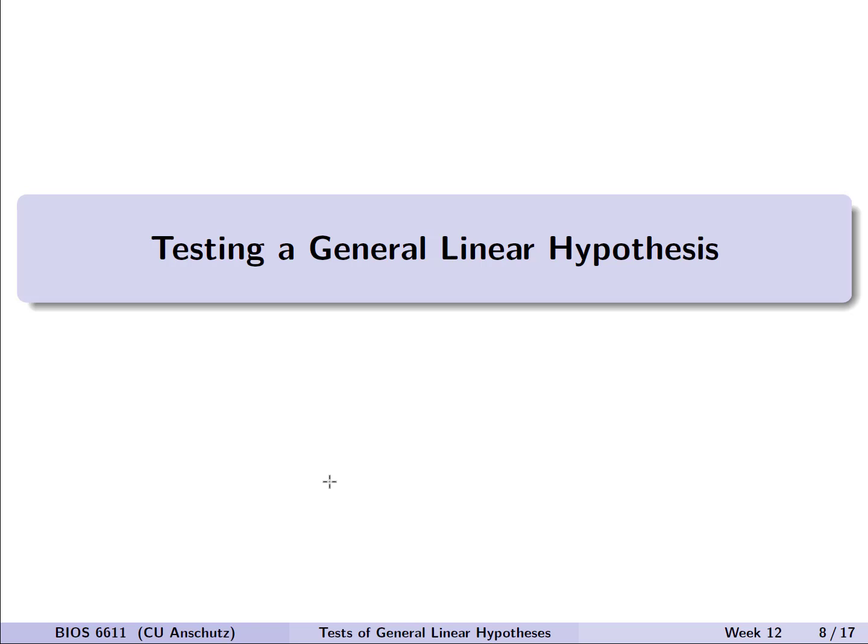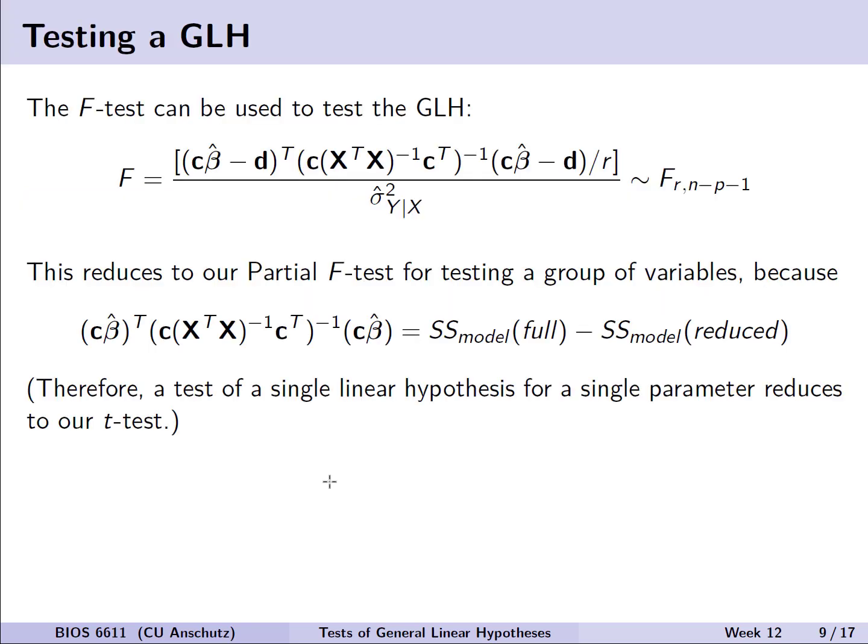Let's look at testing a general linear hypothesis. We can use the F test to derive a p-value to use this general linear hypothesis we've defined with our matrix C and our values we wish to test against D. This is all written in matrix notation or matrix algebra approach, where we have our matrices and vectors for the parameters of estimate, as well as our design matrix of our predictors X. This can further be reduced to our partial F test for testing a group of variables, because this matrix algebra is really equivalent to the sums of square model for a full model minus the sums of square model for a reduced model. Therefore, a test of a single linear hypothesis for a single parameter would further reduce to a T test.